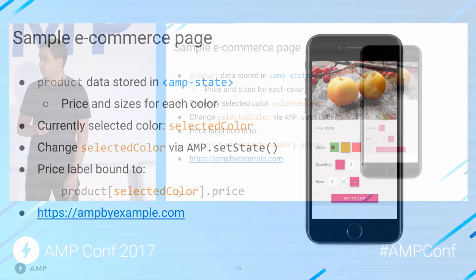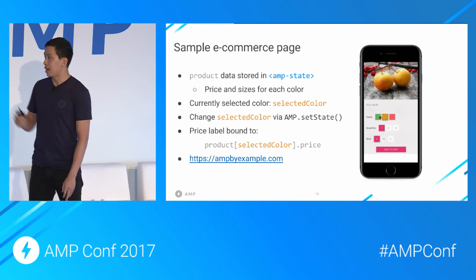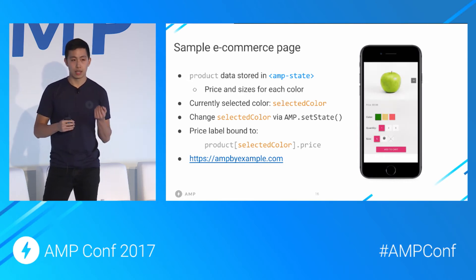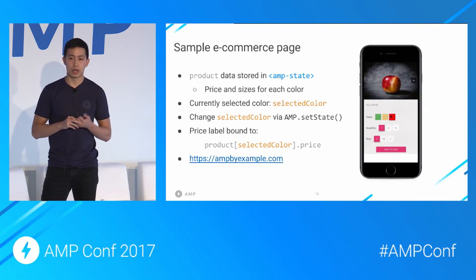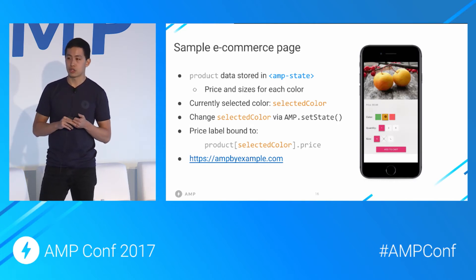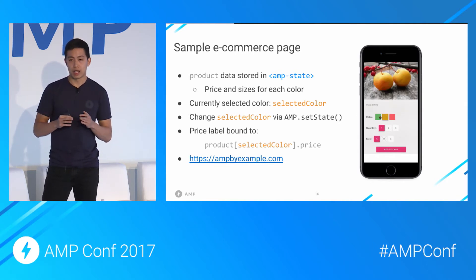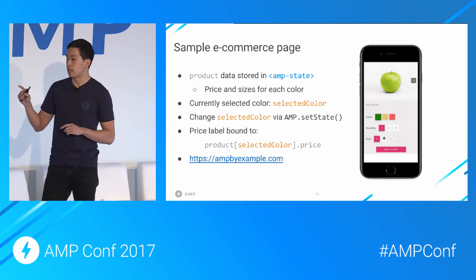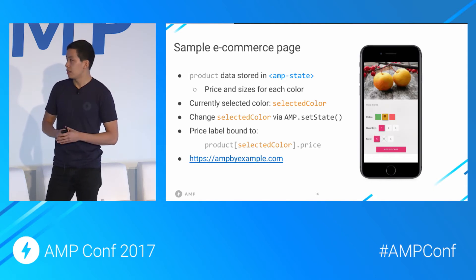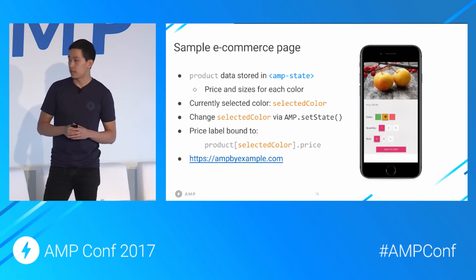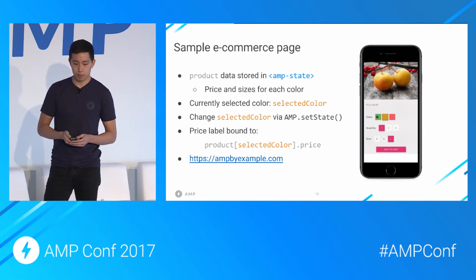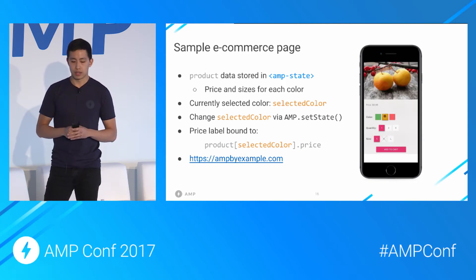How does this work in the more complex e-commerce Apple product page? The product data is stored in amp-state — what color apples are available, the price, and size availability for each color. The currently selected color is stored in a state variable called selected color, which is changed when you tap the individual color button via amp.setState. The price label is bound to the expression product[selectedColor].price, which is a reference to this document-level state. This code and documentation is on ampbyexample.com.